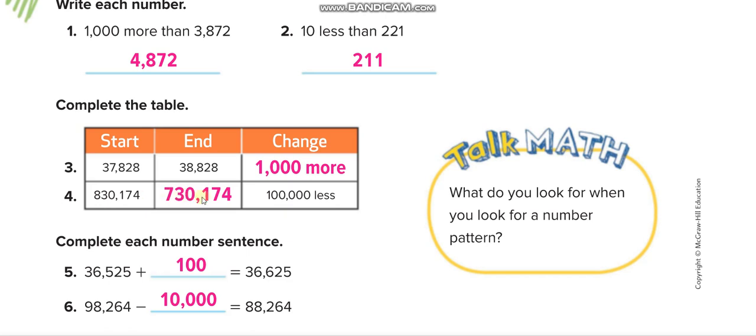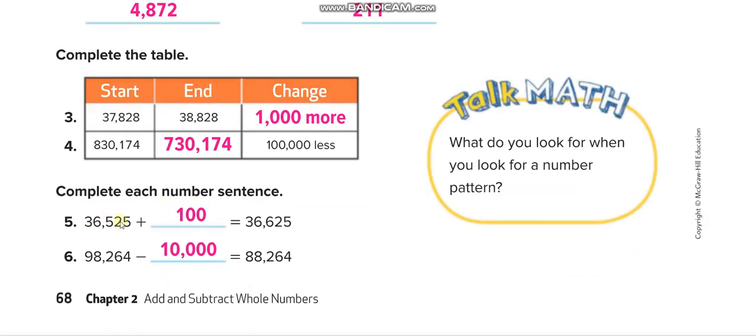830,174, we have to reduce 100,000. So this is the 100,000, minus 1 from it, it will become 730,174. See the differences: from 500 to 600 is 100 more.